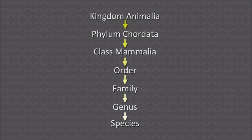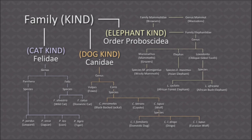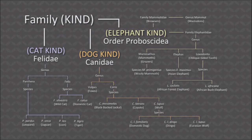We would say, as creationists — and we have many creation scientists who have researched this — for lots of reasons, I would say the kind in Genesis 1 really is more at the family level of classification. For instance, there's one dog kind, there's one cat kind, even though you have different genera, different species. That would mean, by the way, you didn't need anywhere near the number of animals on the ark as people think.